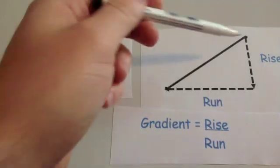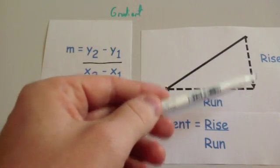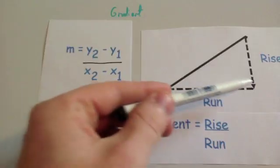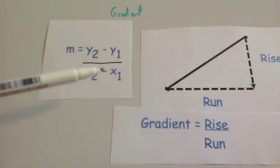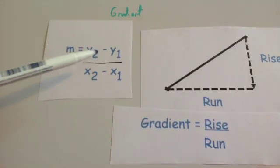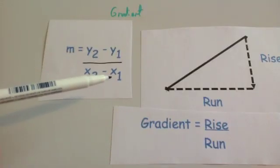This represents the rise, the change in heights. y2 minus y1 gives you the rise, divided by x2 minus x1 gives you the run. So you can work it out using rise divided by run, or you can use y2 minus y1 over x2 minus x1.